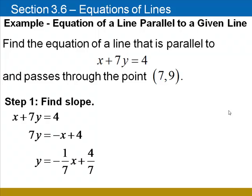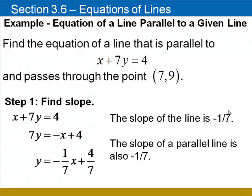The slope of this line is negative 1/7. Now we want our line to be parallel to that, so its slope will also be negative 1/7.